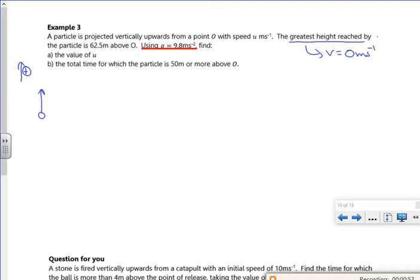Right, I'm going to assume it's from the ground, they don't really tell us. So let's look at part a then. So s is going to be 62.5 meters, it's going in the direction of travel, so it's positive. u is what I want to find out.